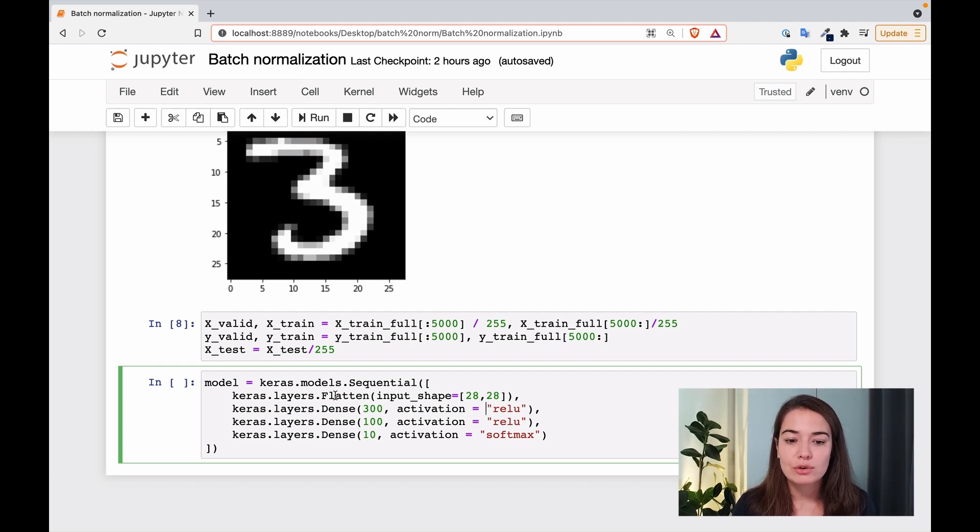Let's look at what our network looks like. We basically have one flatten layer that takes a 28 by 28 matrix and then flattens it to be one long list of 784 values. And then we have two hidden layers, one with 300 neurons, the other with 100 neurons, and an output layer with 10 neurons. So what if I wanted to have batch normalization in here?